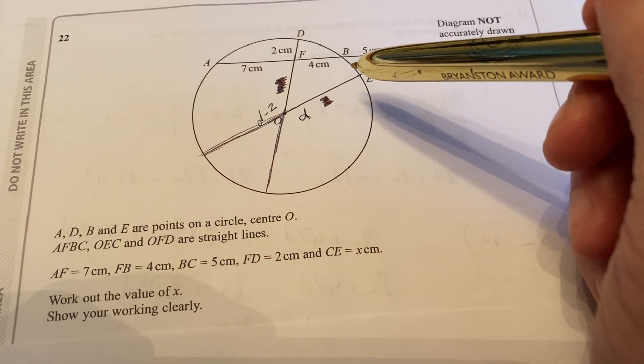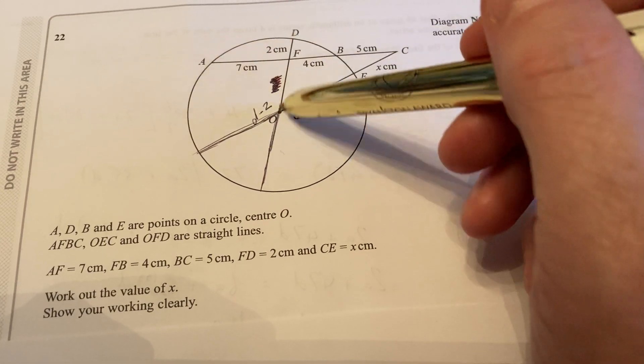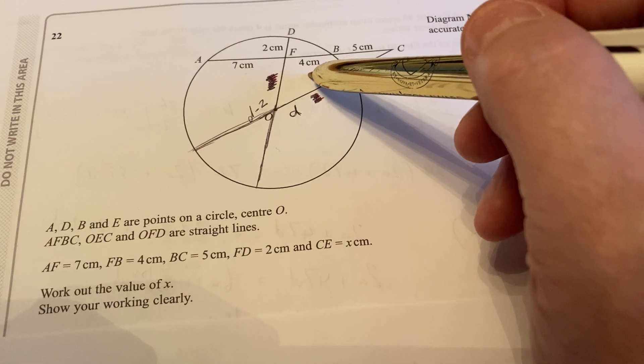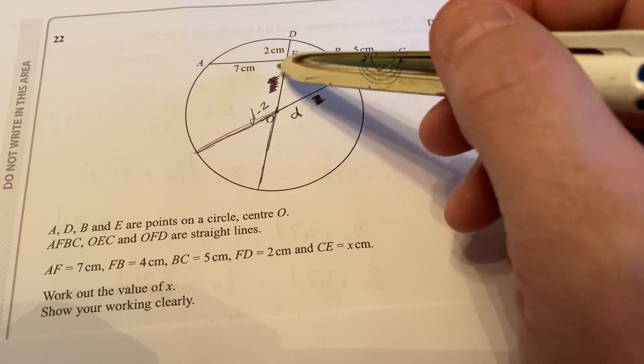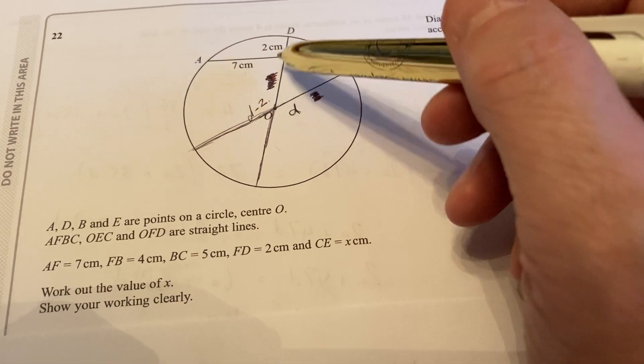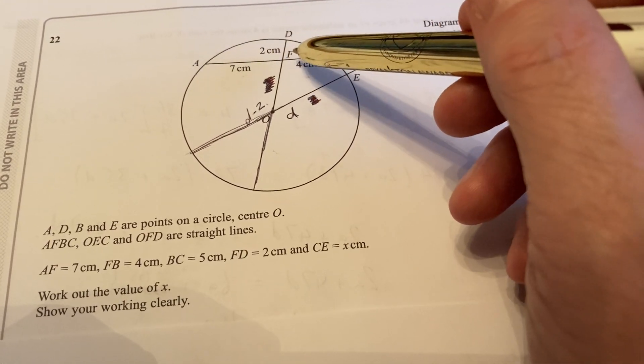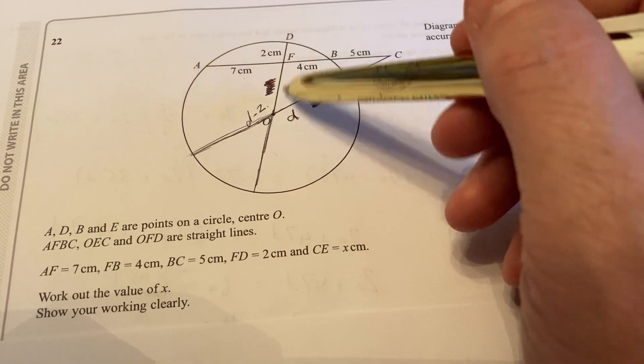The intersecting chords formula, when they're inside the circle, is 7 times 4 is going to be equal to 2 times D minus 2.